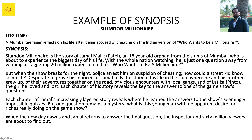Now here is the synopsis expanded from that logline: Slumdog Millionaire is the story of Jamal Malik, an 18-year-old orphan from the slums of Mumbai, who is about to experience the biggest day of his life. With the whole nation watching, he is just one question away from winning a staggering 20 million rupees on India's first Who Wants to Be a Millionaire. But when the show breaks for the night, the police arrest him on suspicion of cheating — how could a street kid know so much? Desperate to prove his innocence, Jamal tells the story of his life in the slum where he and his brother grew up, their adventures, vicious encounters with local gangs, and of Latika, a girl he loved and lost.